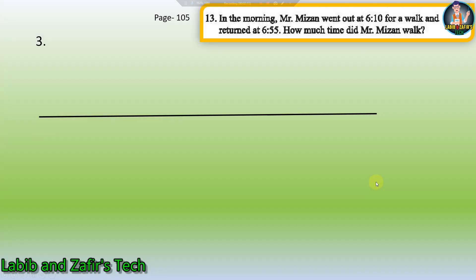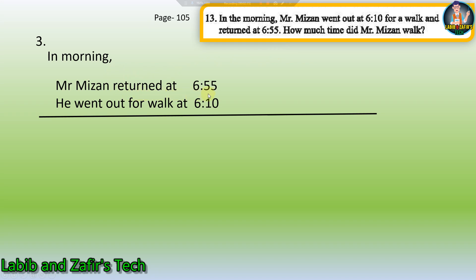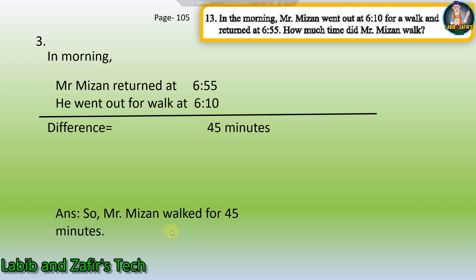Now let's go through the third word problem. In the morning, Mr. Mizan went out at 6.10 for a walk and returned at 6.55. How much time did Mr. Mizan walk? We have to subtract 6.10 from 6.55 to find out how long he walked. Mr. Mizan returned at 6.55 and went out at 6.10. If we subtract we get 45 minutes, because 5 minus 0 is 5, 5 minus 1 is 4, and 6 minus 6 is 0. So Mr. Mizan walked for 45 minutes.